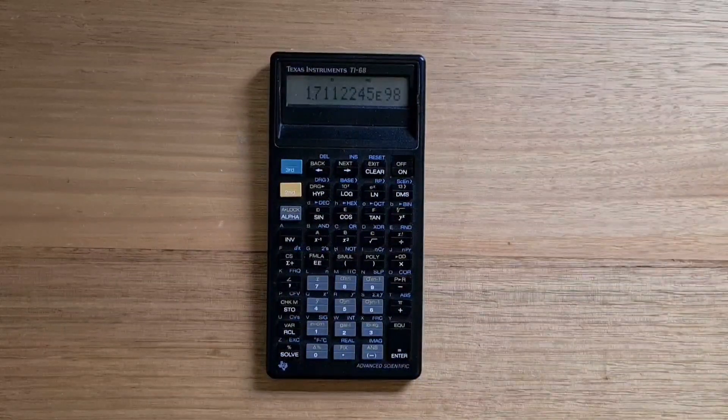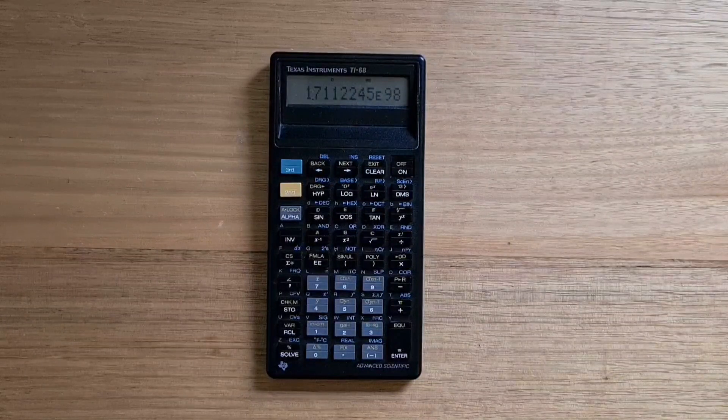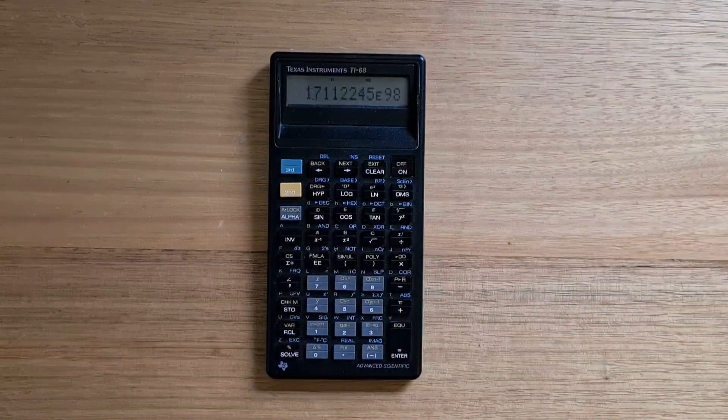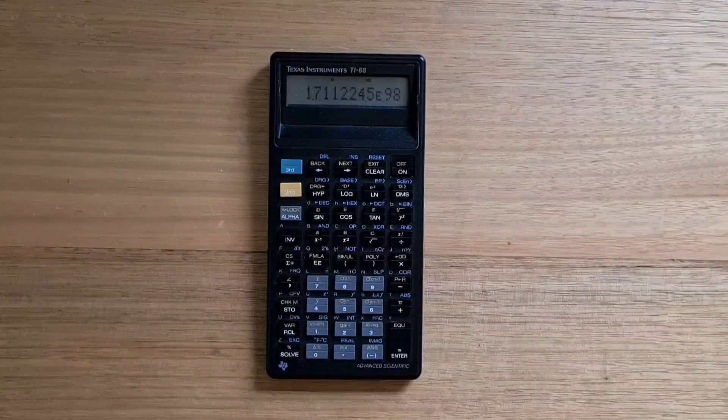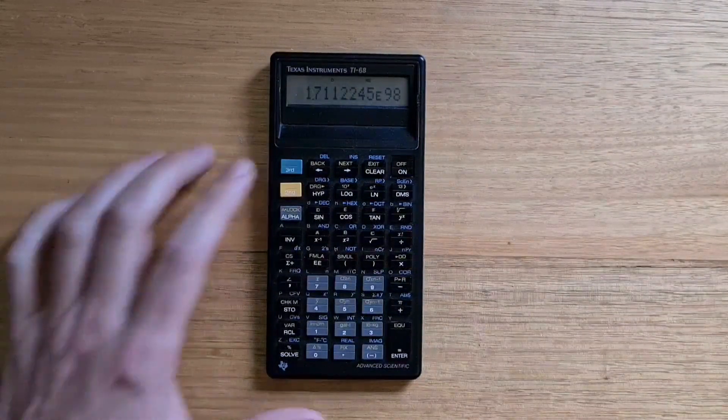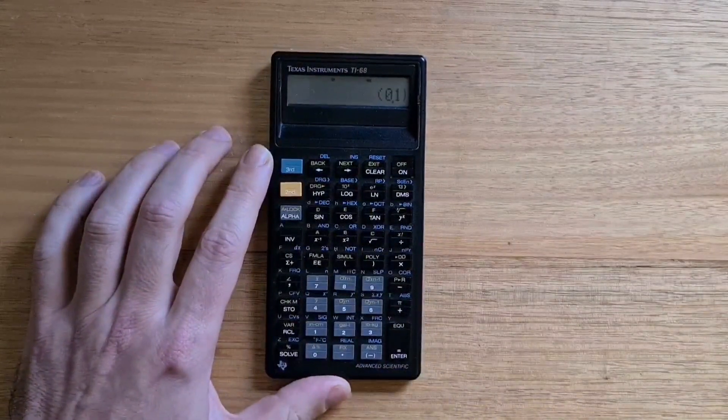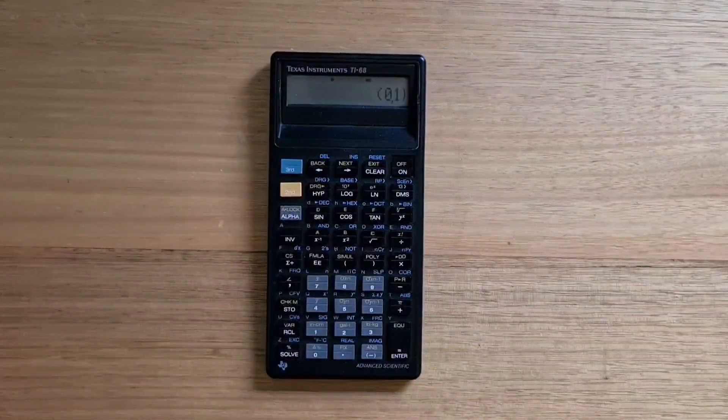The TI-68 has great support for complex numbers. There's no separate modes or operations for them, they're just integrated with the normal operation. For example, I can take the square root of negative one, and here the result i is represented in polar format.